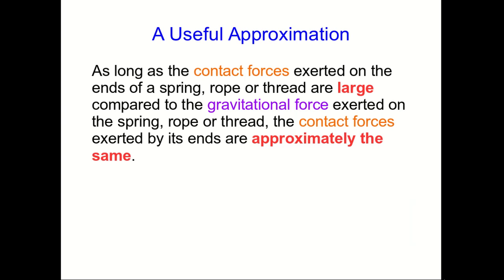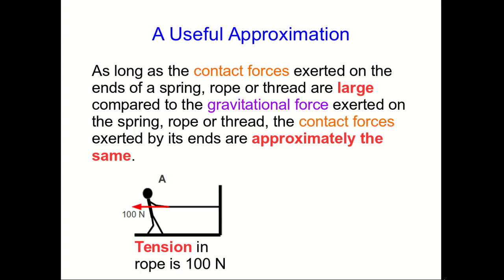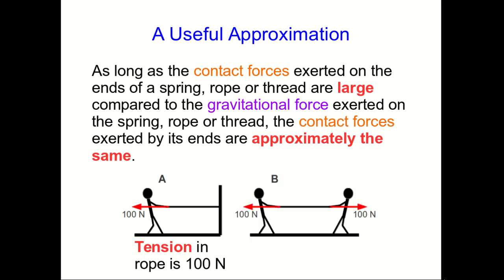So as long as the contact forces exerted on the ends of something like a spring or a thread are large compared to the gravitational force exerted on it, then the contact forces it exerts on its ends are approximately the same. So when you pull on one end of a rope with a 100-newton force and it's attached to a wall, the force it exerts on the wall is about 100 newtons. We say the tension in the rope is 100 newtons — that's just the magnitude of the forces that both ends of the rope will exert. Similarly, if you pull on one end of a rope with 100 newtons and your friend is pulling on the other end, the force your friend must be exerting is 100 newtons, because the tension in the rope is 100 newtons and the forces exerted at the ends have to be the same.